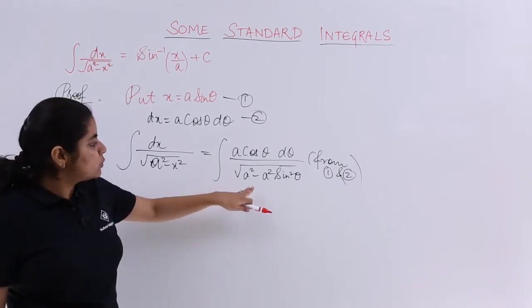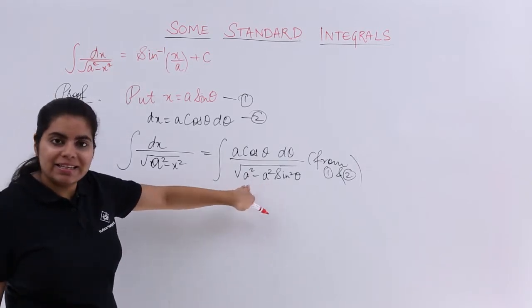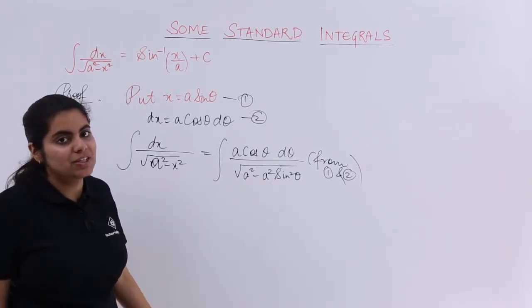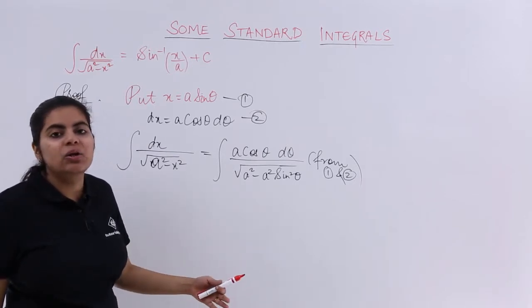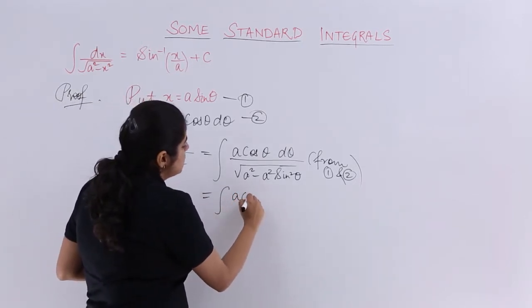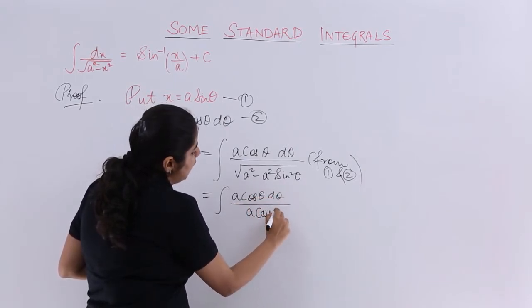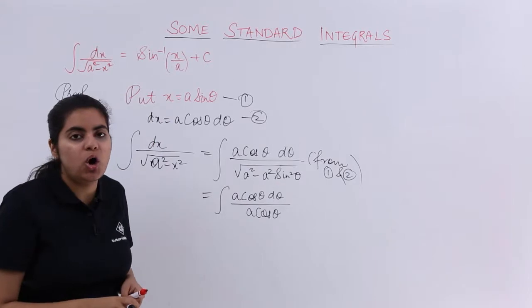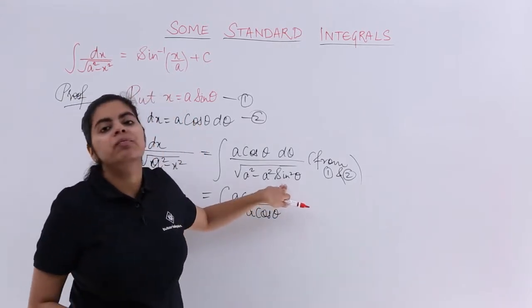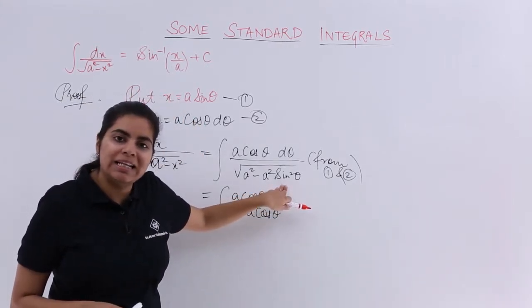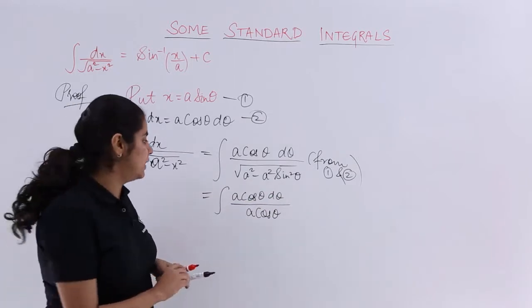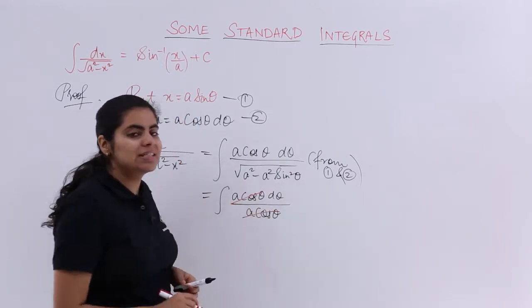Next, what we can do is a square is there. Let's take common: one minus sine square theta is cos square theta. In the under root it becomes cos theta. So a cos theta d theta in numerator. In denominator also a cos theta, because of the similar obvious reasons, usage of sine square theta plus cos square theta equals one. That is why I have done this. Cancel whatever cancels.